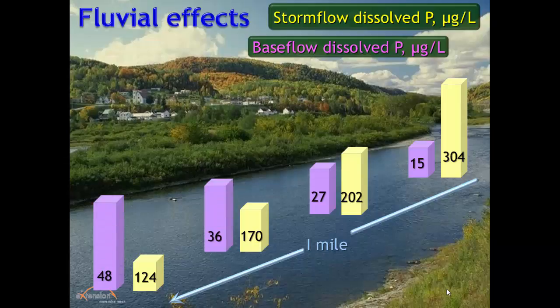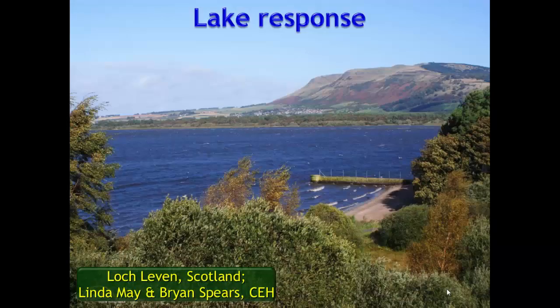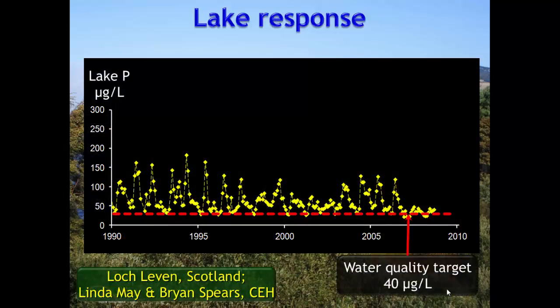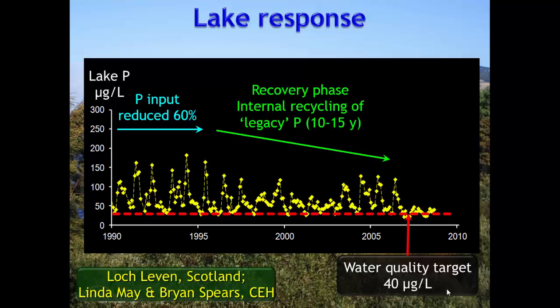During base flow, the opposite happens: water entering the stream has less phosphorus, but then picks up phosphorus released from streambed sediments. Data shared from work by Lyndon Mays, Spears, and Helen Jarvie on Loch Nay show that a point source was implemented in 1995 targeting a water quality criterion of 40 parts per billion. Annual averages do decline after that intervention, though there is variability. After about 15 years, the water quality target was nearly met.